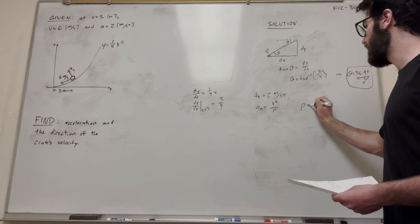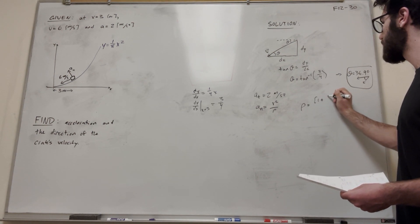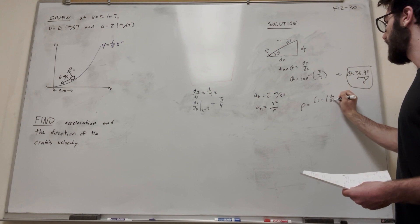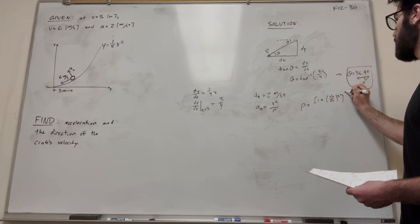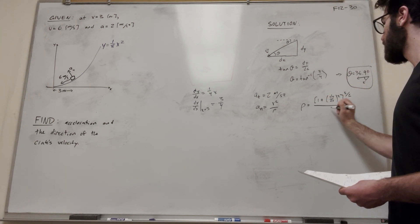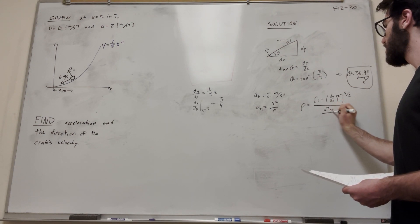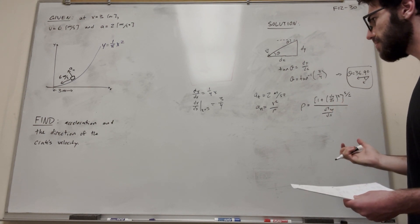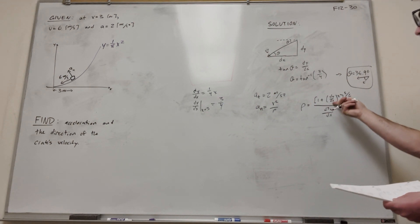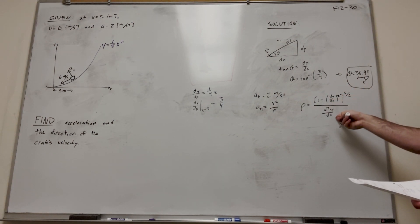So the radius of curvature equation is equal to 1 plus dy dx squared to the 3 halves over the second derivative of dy dx. So luckily we already solved for dy dx, so we already have the numerator, but we just need to find the second derivative.